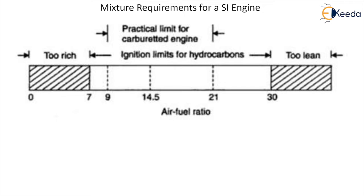Between 0 and 7, there is a region marked by hatched lines which indicates 'too rich.' After 30, again the region is marked with hatched lines and this time it says 'too lean.' Between 7 and 30, or more specifically between 9 and 21, you find the ignition limits for hydrocarbons, and between 9 and 21 you find the practical limit for a carbureted engine. So between 7 and 30, a hydrocarbon will be able to burn, but if you are supplying that fuel through a carburetor and mixing it with air, then between 9 and 21 that fuel will burn.